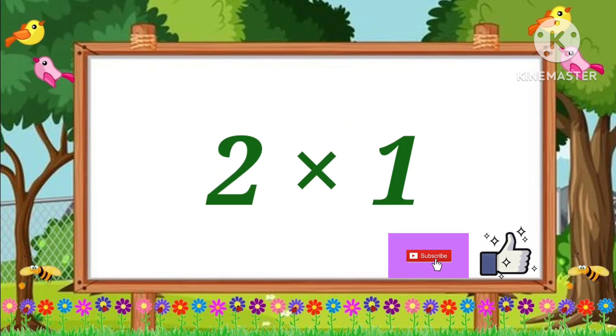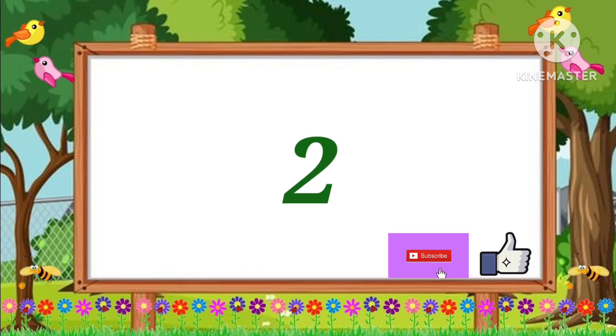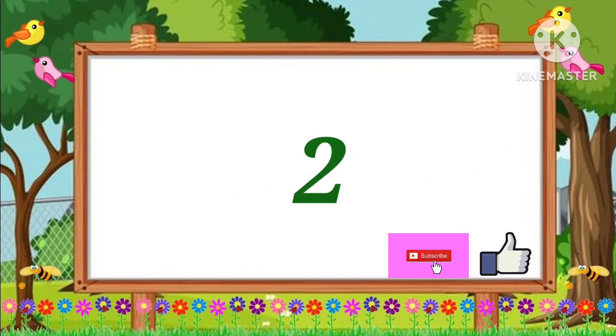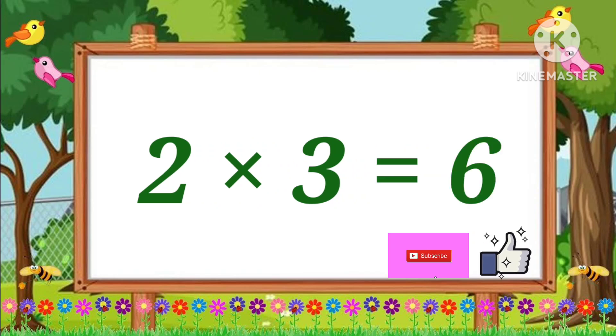Two ones are two. Two ones are two. Two twos are four. Two twos are four. Two threes are six. Two threes are six.